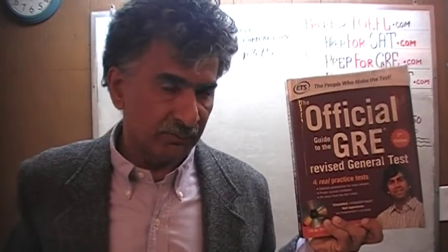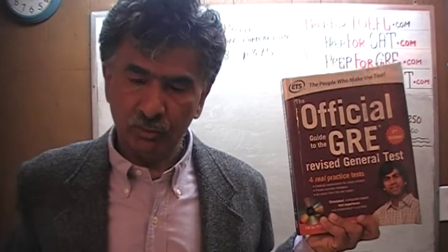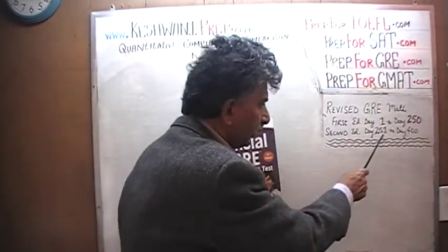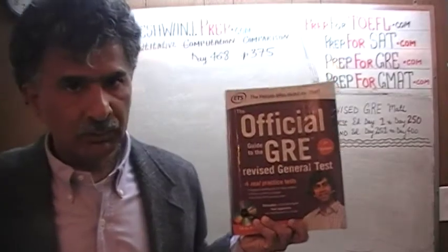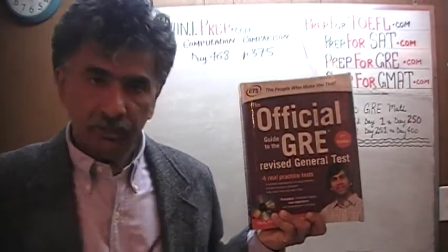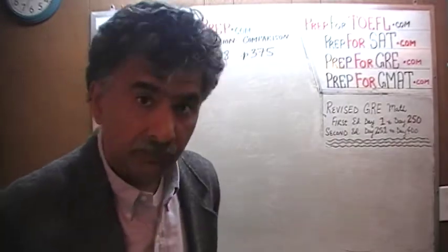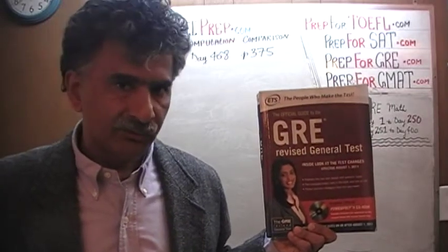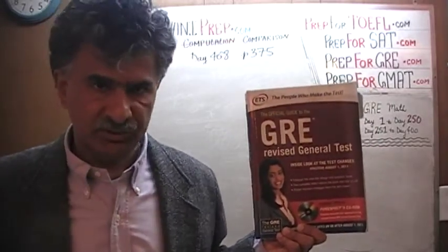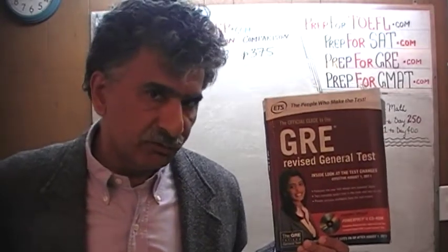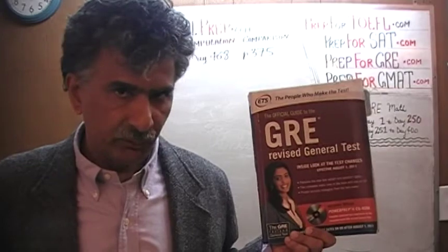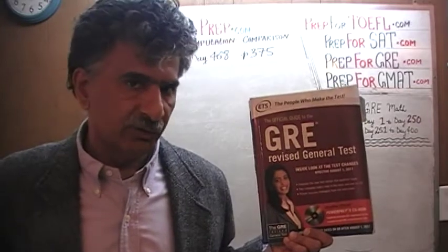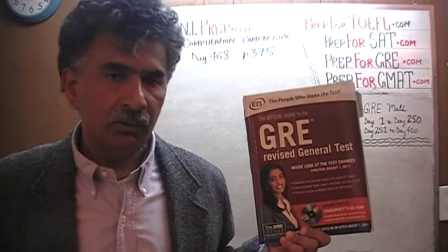If you happen to come across a math problem that gives you trouble and you wish to watch the solution to it, you will find the solutions to almost all the math problems in this book from day number 251 through 400. This book, the second edition, happens to contain exactly the same problems in most cases, appearing on exactly the same page numbers as those that appeared in the first edition of the revised GRE. For the original solutions, you will find them from day number 1 through 250. The original solutions tend to be a little bit lengthier and more in depth.